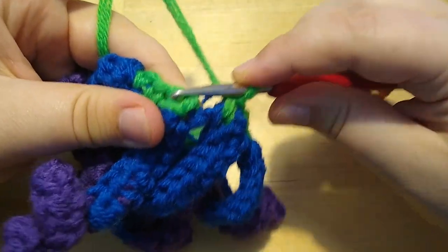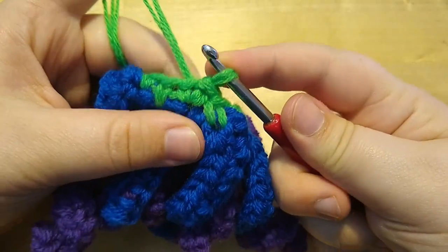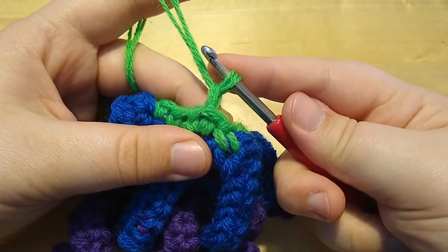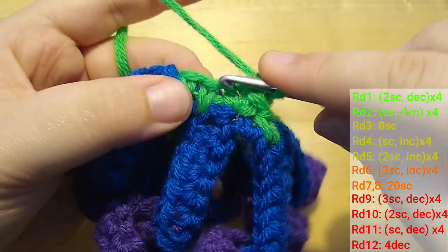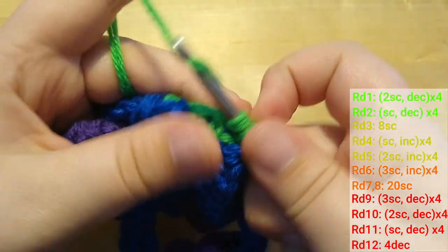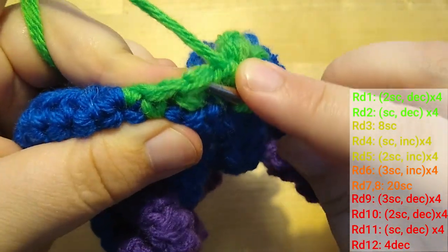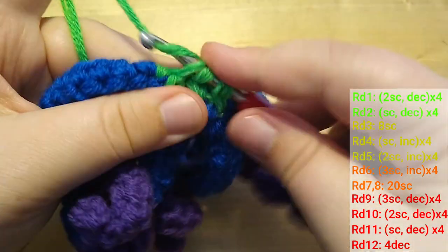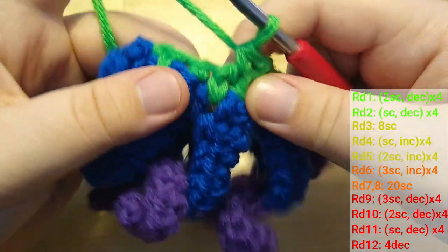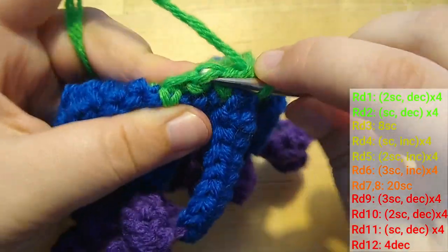To close up the round, I'm finding the first single crochet and I make a slip stitch into it. Then I chain 1 to start the next round and I begin the pattern in the same stitch I just slip stitched into with 2 single crochets and a decrease. To make a decrease, I find the next 2 stitches, pick up just the front loop of each of them and then make a single crochet into that. This pattern of 2 single crochets and a decrease gets repeated all the way around, 4 times in total.